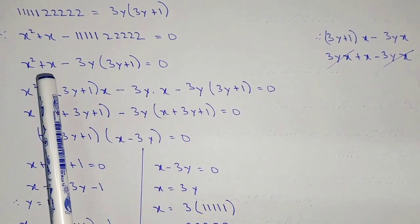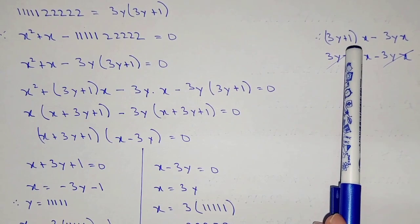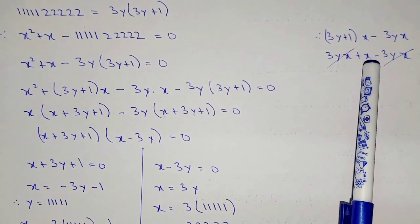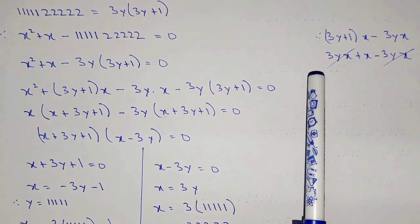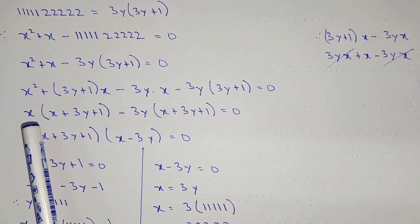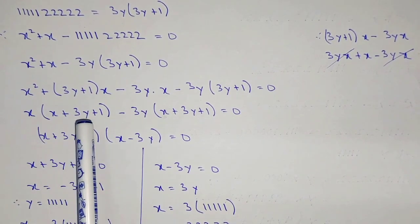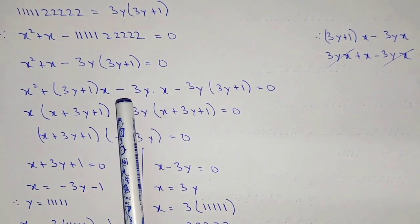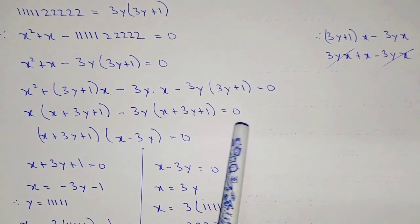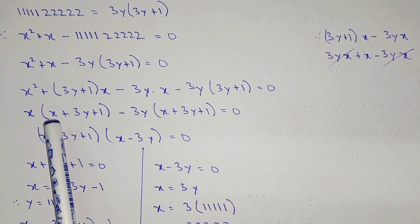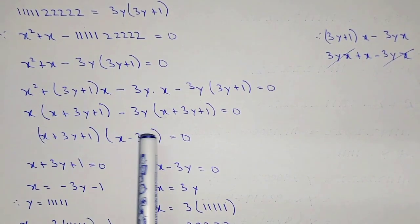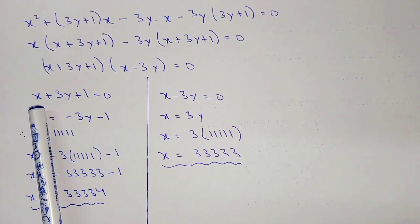Rewriting x as (3y plus 1) into 3y: we get 3y plus 1 into x minus 3y times x. So 3yx plus x minus 3yx — the 3yx terms cancel, leaving x. Taking x common from the first two terms and minus 3y from the last two, we get x(x plus 3y plus 1) minus 3y(x plus 3y plus 1) equal to 0. So the two brackets are (x plus 3y plus 1) and (x minus 3y) equal to 0.